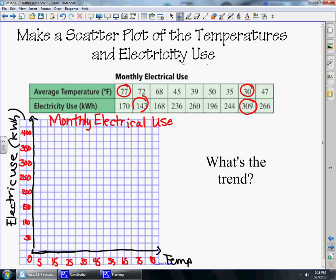Now we're going to graph the points. When the temperature's 77, which is about halfway between 75 and 80, we're going to use 170 kilowatts, just below 175. Then we have 72 degrees using 143 kilowatts. And when the temperature is 68, just a little bit less than 70, we use 168 kilowatts, which is going to be right about here.